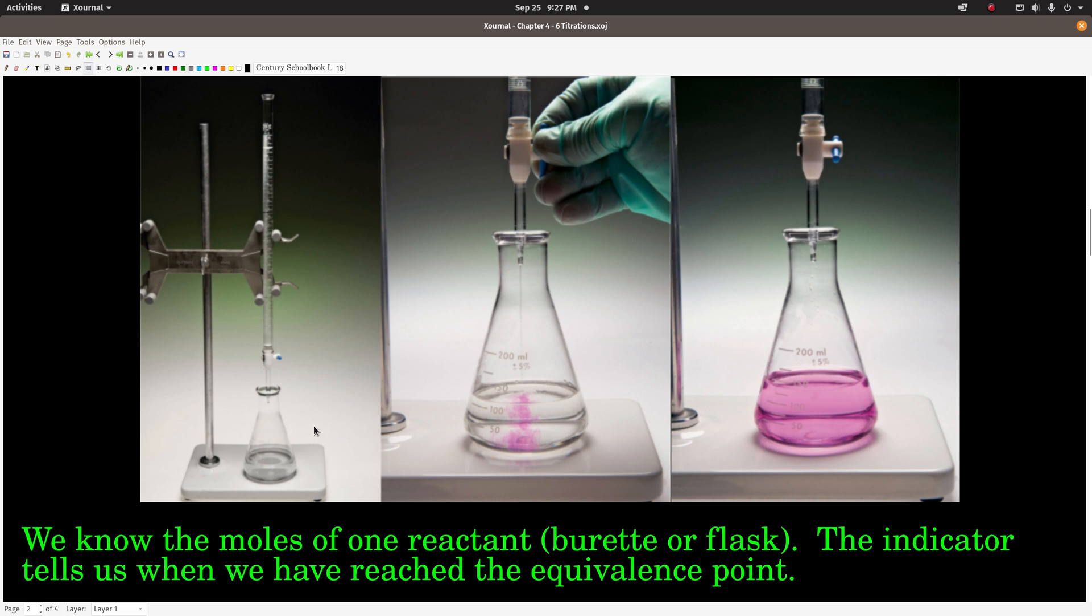That's called the equivalence point, and one method to do that is using what's called an indicator. This indicator right here is called phenolphthalein, and what it does is it changes color from the solution's color from clear to a light red once you've gotten to the point where you've added just enough moles of one to use up the moles of the other.